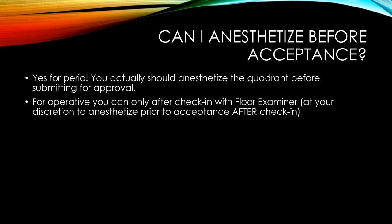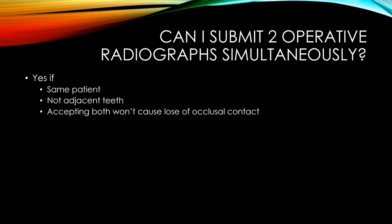Can I anesthetize before acceptance? Yes — for perio, you should anesthetize the quadrant you're going to work on before approval. For operative, you can only do so after checking with the floor examiner; it's at your discretion to anesthetize prior to acceptance after checking. Can you submit two operative radiographic lesions simultaneously? Yes, as long as it's the same patient, they're not adjacent teeth, and it won't cause a loss of occlusal contact.